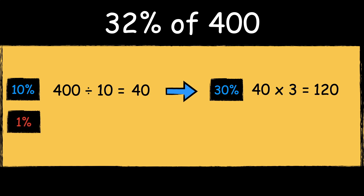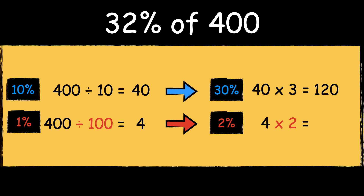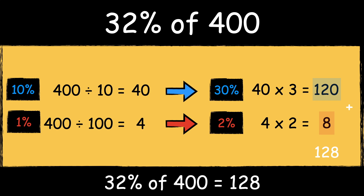Next we can find 1% of the number by dividing it by 100. 400 divided by 100 is 4. We multiply the answer by 2 to find 2%. 4 times 2 is 8. So we have 30% of 400 and 2% of 400 — we add the answers together to find 32%. 120 add 8 is 128, so 32% of 400 is 128.